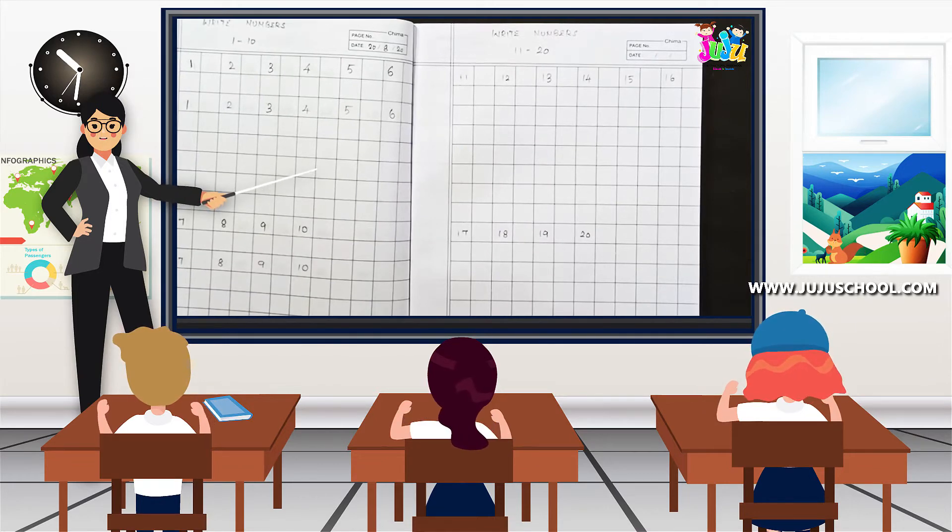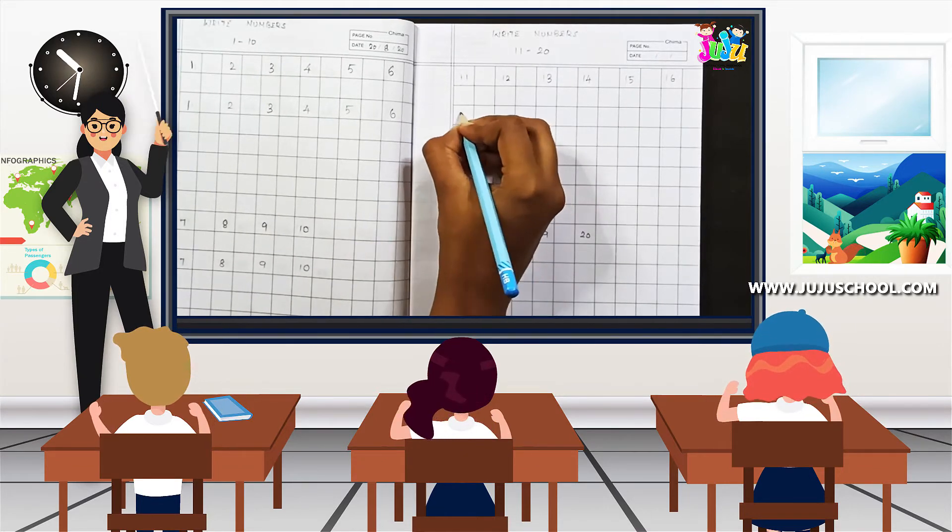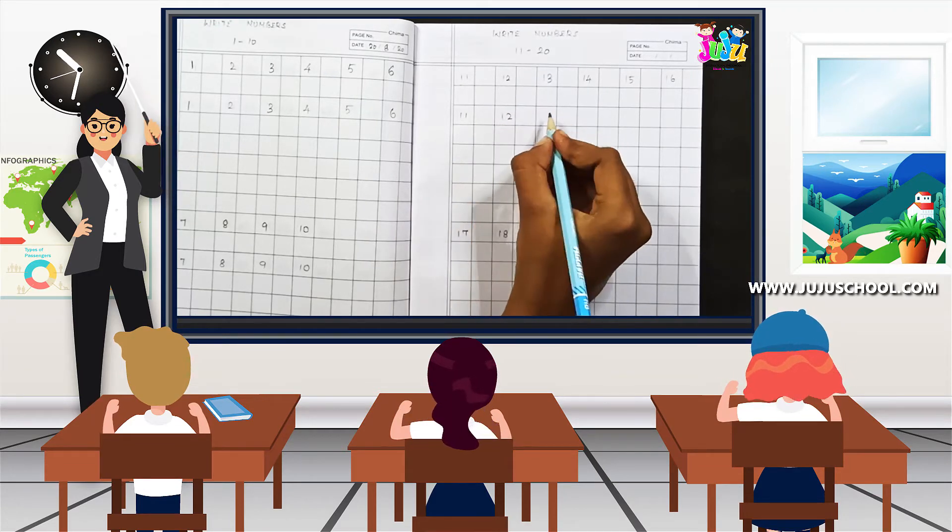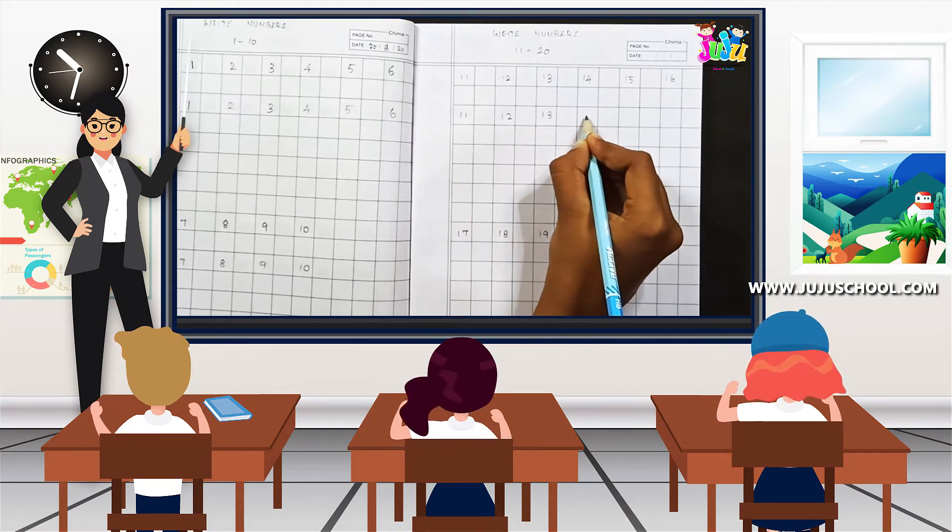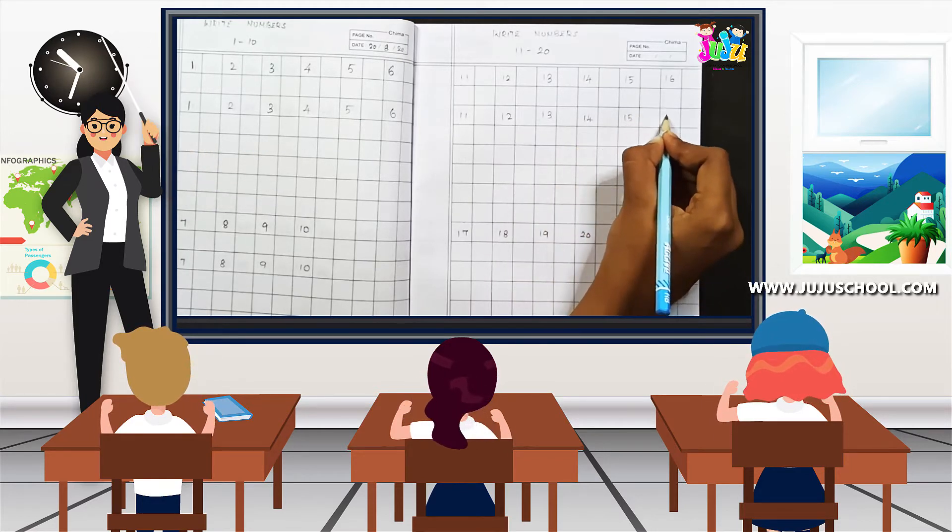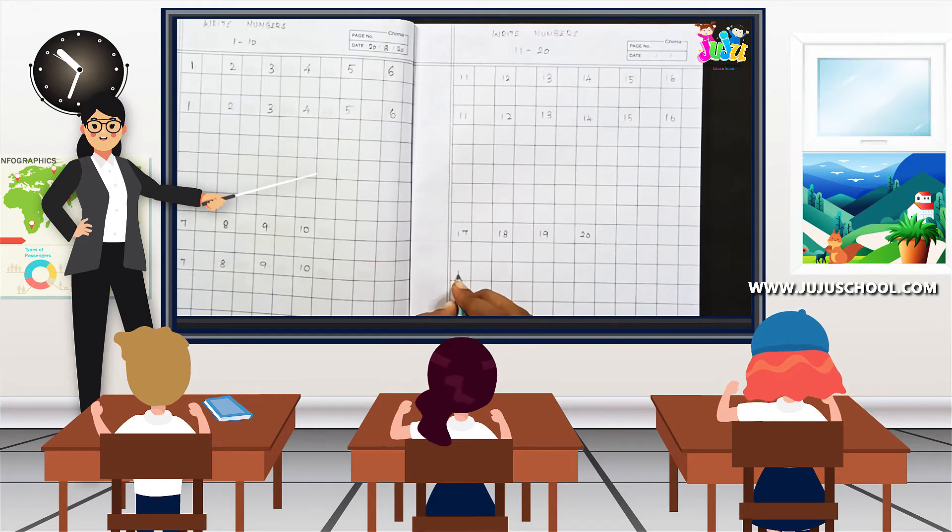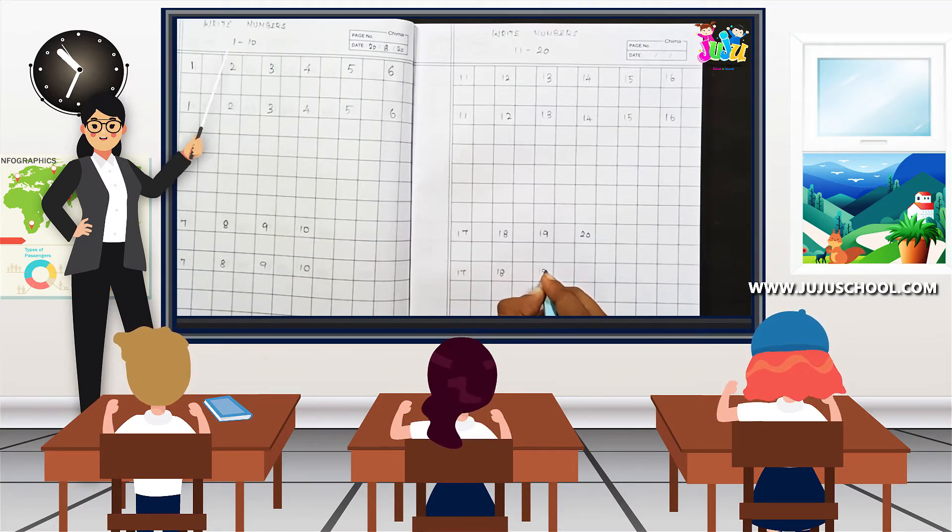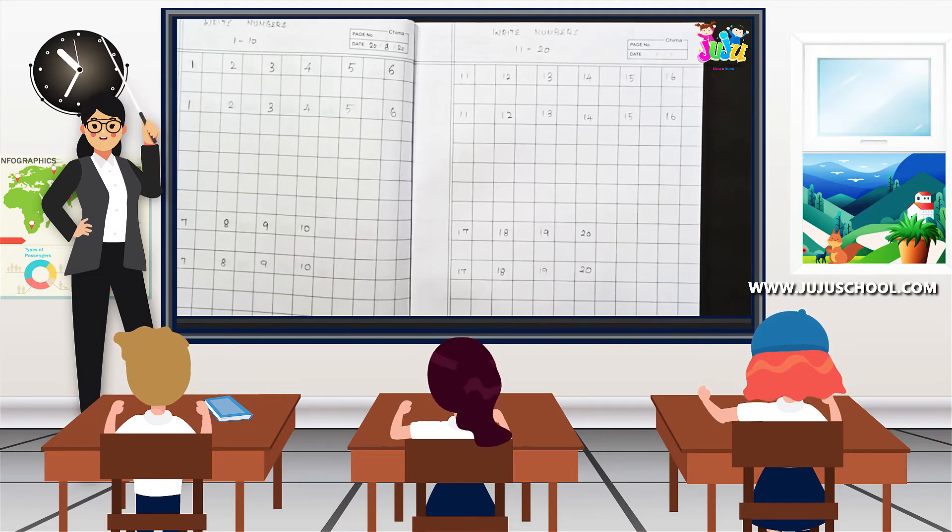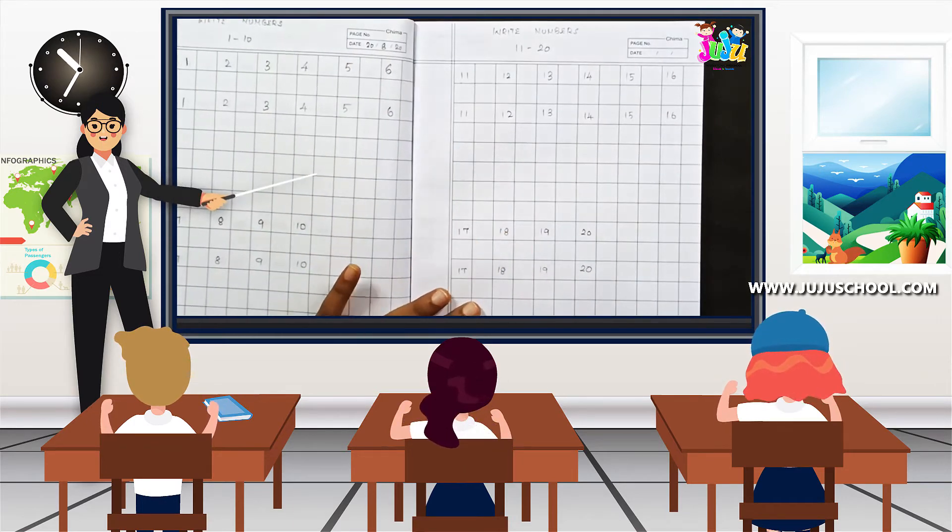So now again we are going to write. Listen carefully. 11, keep telling the numbers. 12, 13, 14, 15, 16, 17, 18, 19, 20. That's all. So I have completed the second page also.